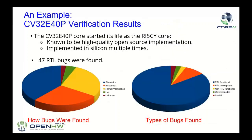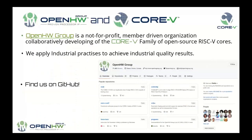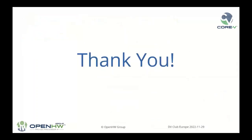We've done this with several cores. This is the first one we did — I always get asked about bugs. We started with something at TRL3, and to get to TRL5 we found 47 bugs. It's up to you whether those 47 bugs are important, but I tend to think that they are. To wrap up: we're a not-for-profit member-driven organization, we apply industrial practices to get quality results, and you can find us on GitHub. Thank you very much.